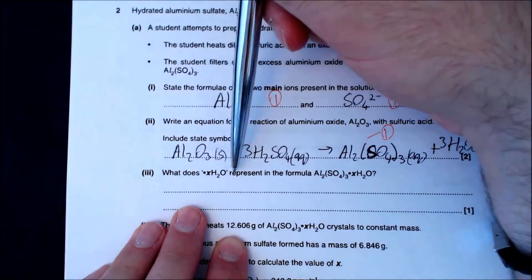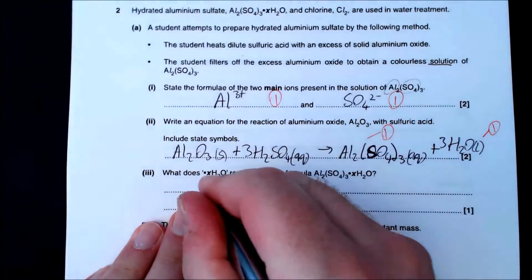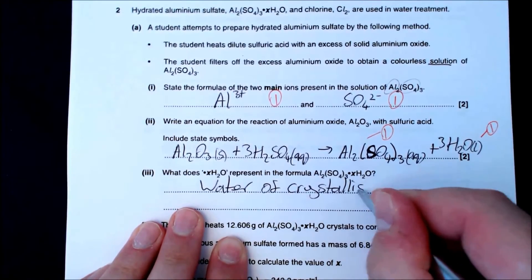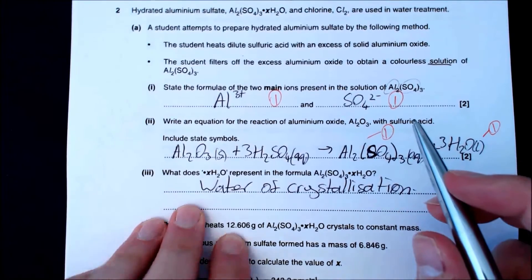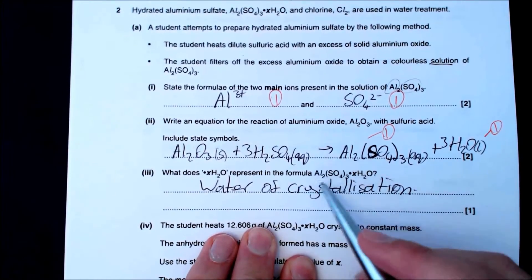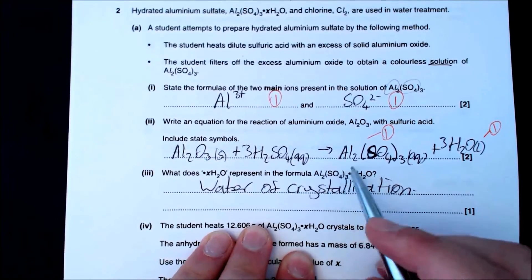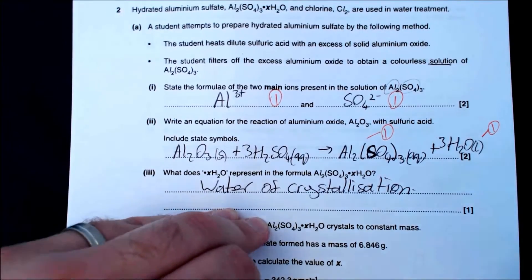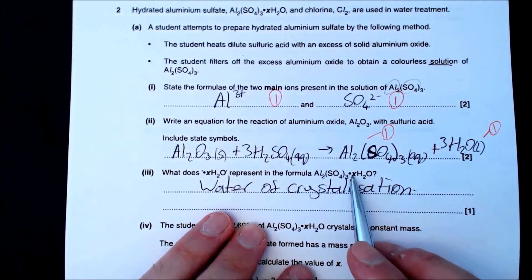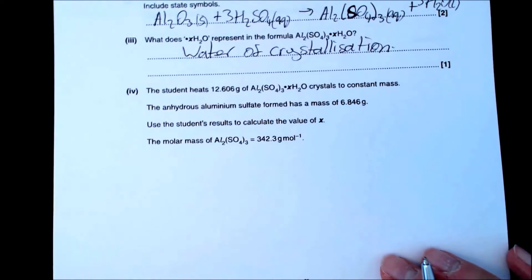The dot·xH₂O in the formula represents water of crystallisation. Ionic compounds are a bit like a sponge — they absorb water. For every one mole of the compound, x moles of water are attracted to it. It's not chemically bonded, but attracted within the structure. This is called water of crystallisation.